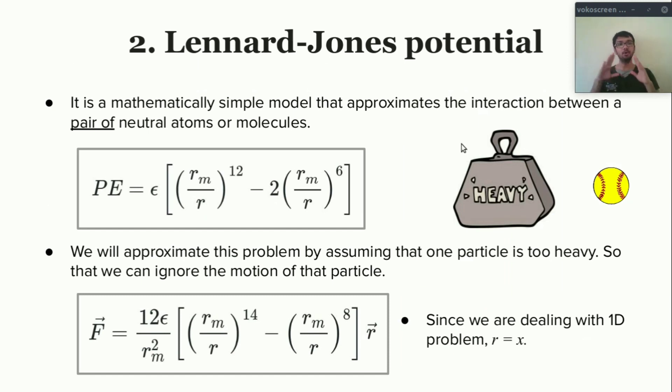Let's jump to the second example, the most popular example: Lennard-Jones potential or LJ potential. Why is it so famous? The answer is it's a mathematically simple model that approximates the interaction between pair of neutral atoms or molecules. This is the expression for LJ potential.